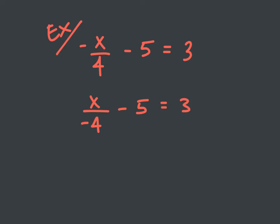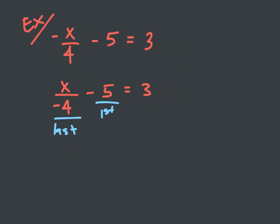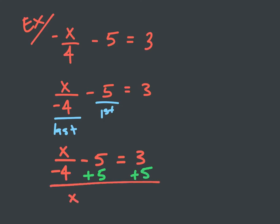From here I'll do this the same way: whatever is next to my x I do last, and whatever constant I'm adding or subtracting I do first. So the first thing I want to do is the opposite of subtract five, which means I add five to both sides. As a result, I get x divided by negative four equals — negative five plus five cancels to zero — and three plus five is eight.